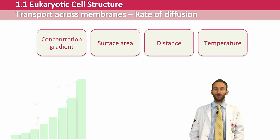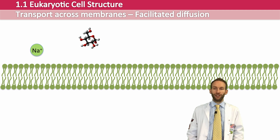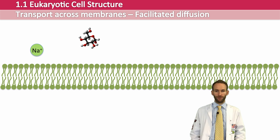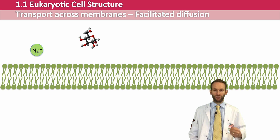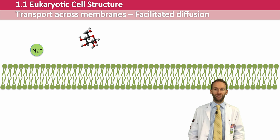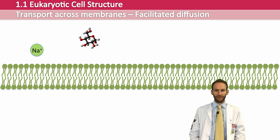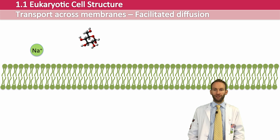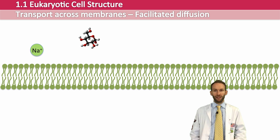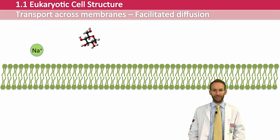So the large molecules and the charged ions — how do they get across the membrane? They can cross by a process called facilitated diffusion, which basically means that they are helped across from one side to the other, and they are helped across by special proteins called transport proteins. Some transport proteins are called channel proteins, and they work almost like a little tunnel through the membrane. They can be gated, which allows them to either be open or closed, depending on what the cell needs.